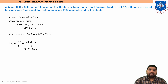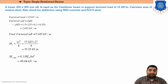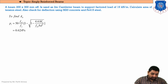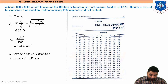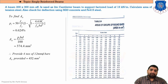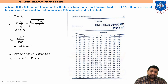For a cantilever beam, maximum bending moment MU = WL²/2 = 17.65 × 2² / 2 = 35.05 kNm. Checking MU against MU lim = 0.138 × fck × b × d² shows MU < MU lim, so the section is under-reinforced. Calculating Pt = 0.64%, giving AST required = 374.4 mm² = 3.74 cm². From the steel table, providing 4 numbers of 12 mm diameter bars gives AST provided = 4.52 cm², which is greater than 3.74 cm².